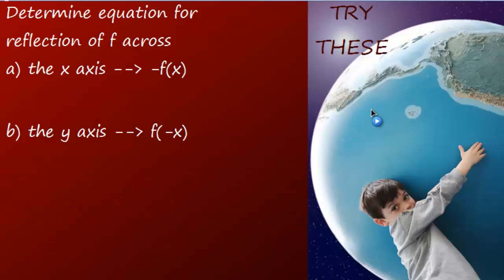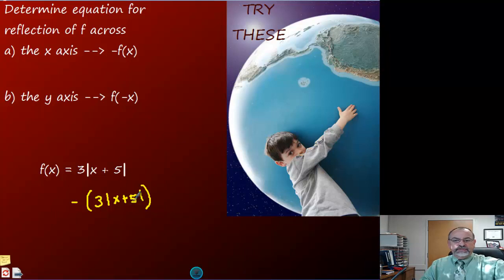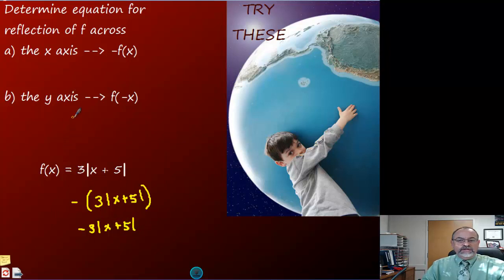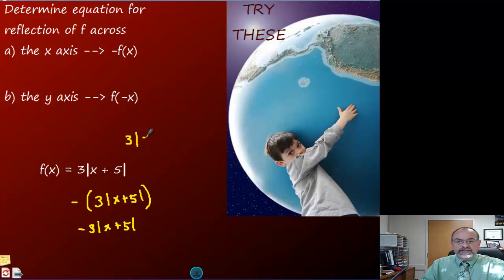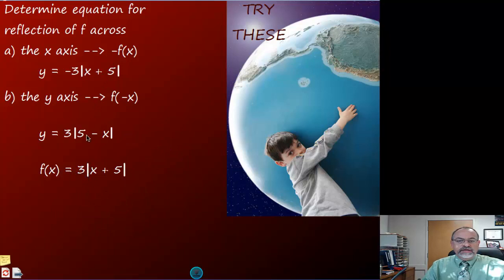Let's do a couple of examples. We have f(x) = 3|x + 5|. To reflect over the x-axis, we put a negative sign in front of the entire function, giving -3|x + 5|, because we want all y values to be the opposite. To reflect over the y-axis, we substitute negative x for x, giving 3|5 - x| — we just reverse the order inside the absolute value.